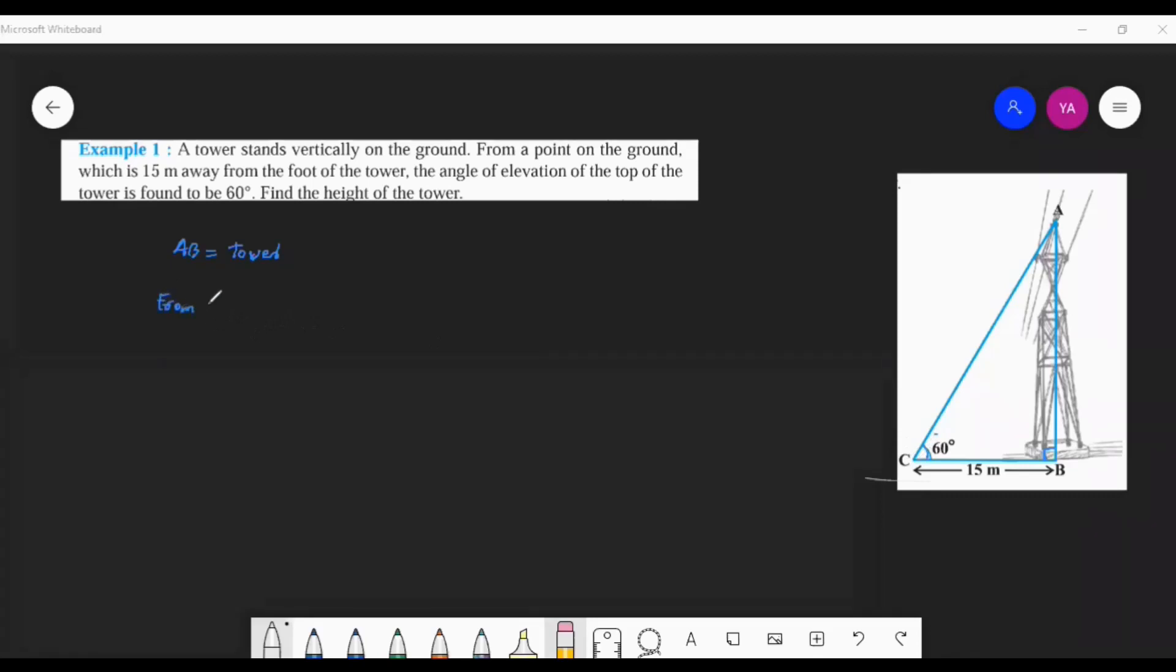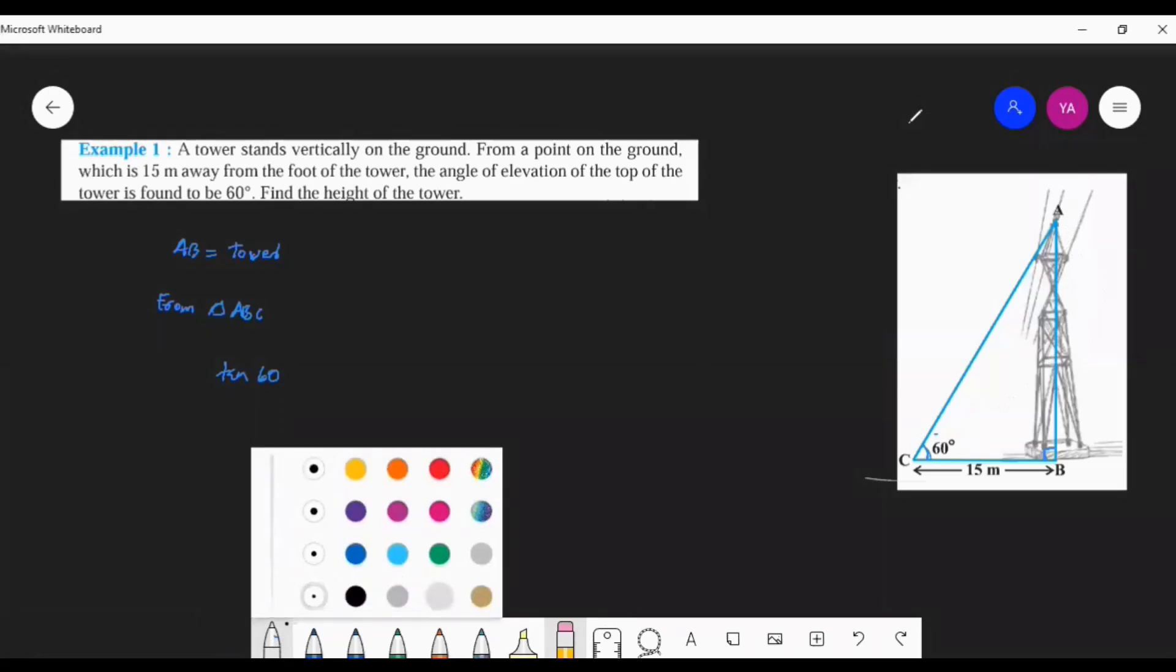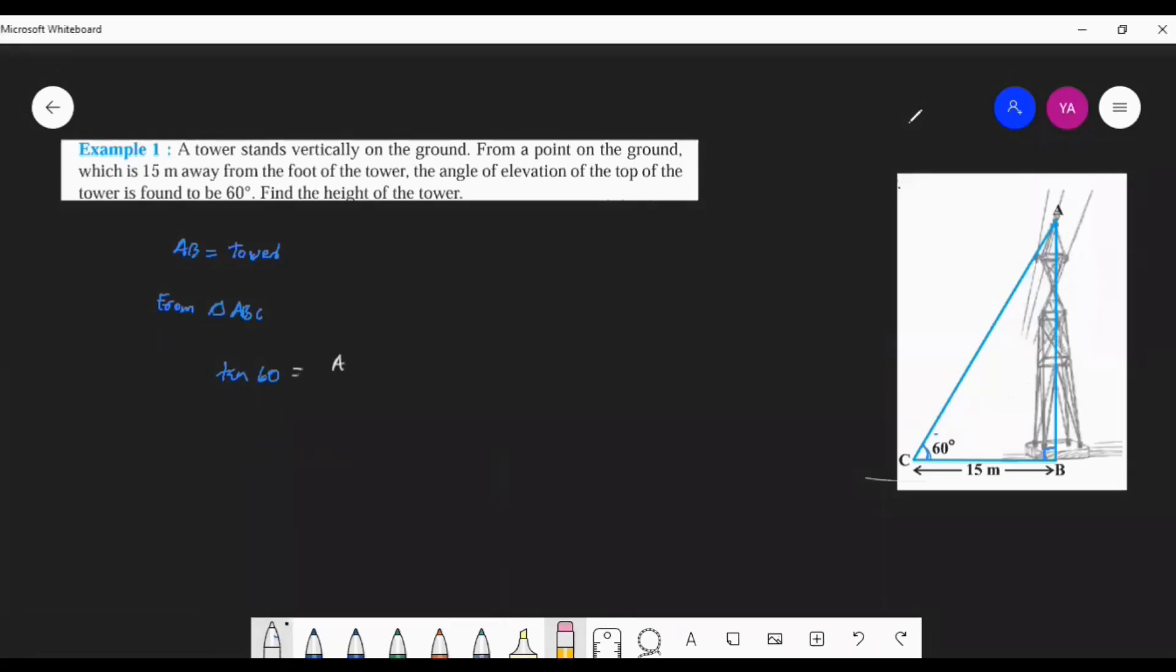Then you start. From the right triangle, from the triangle in the picture, from triangle ABC, you simply apply tan 60°. In this picture, what is tan 60°? Root 3. And the value from the triangle with the side AB by BC. AB by BC will come—AB by BC.